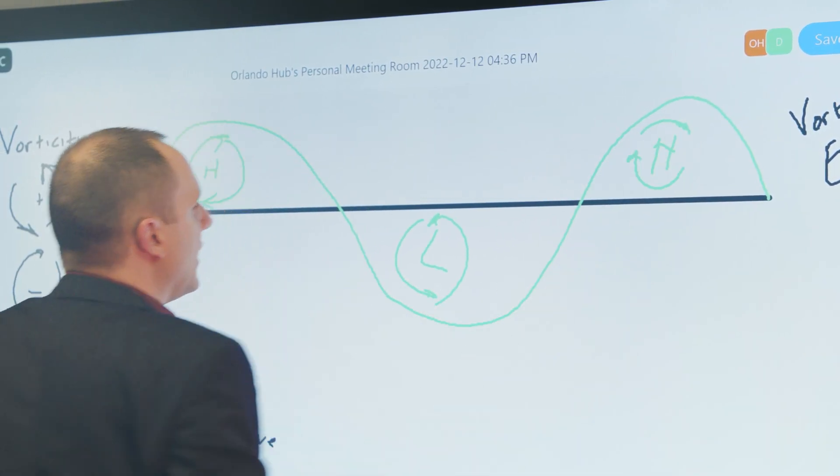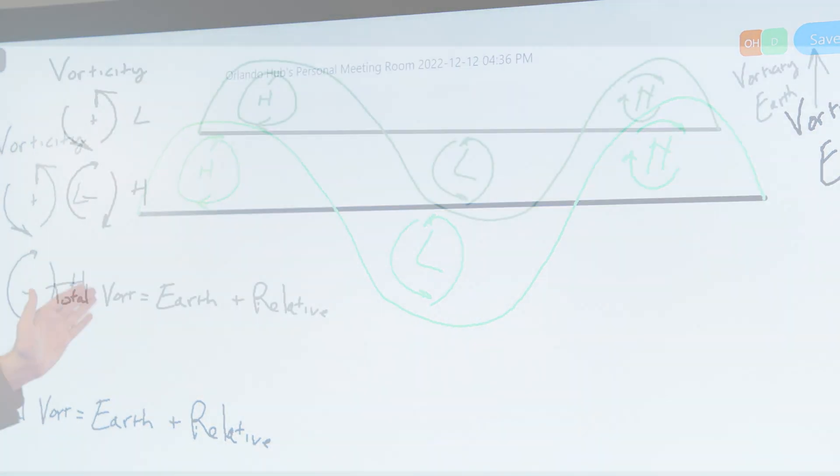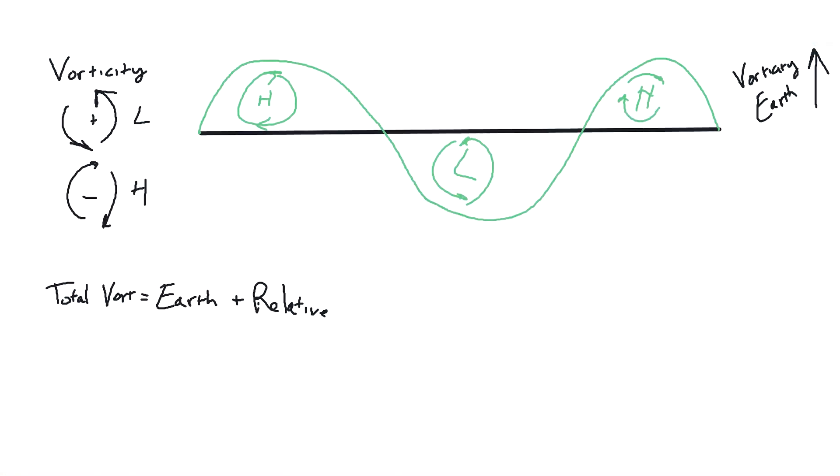So this is a Rossby wave. It is a series of highs and lows. And you see this in weather patterns all the time. You'll have hot weather, you'll have storms, you'll have cool weather. You'll have hot weather, you'll have storms, you'll have cool weather. This is a Rossby wave. But this is what makes these so unique and why it's relevant for hurricanes.